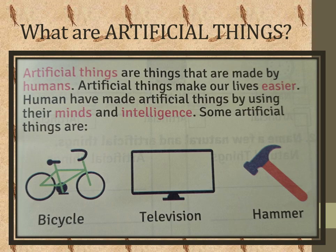Next is Artificial Things. All those things which are made by humans are artificial things. Artificial things make our lives easier. Humans have made artificial things by using their minds and intelligence. Some artificial things are bicycle, television, and hammer. You can see lots of artificial things in your house — for example, iron which we use to press our clothes. Fan is also an artificial thing; it gives us air. There are lots of artificial things in your house.